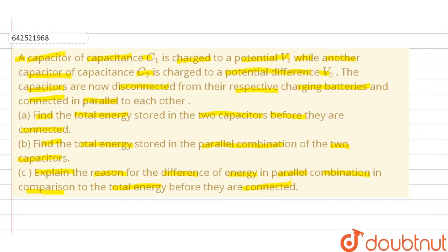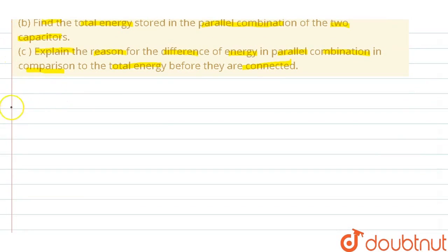Let's solve the question. For the first part of our question, part A: The total energy before they are connected. If we assume that the total energy is capital E, we can write the total energy as energy in capacitor C1 plus energy in capacitor C2.